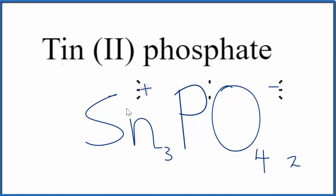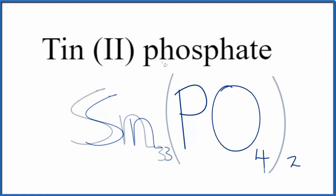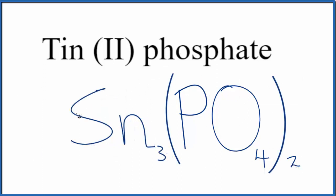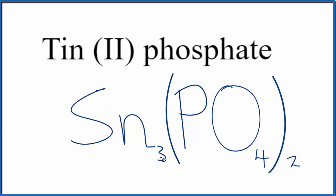Get rid of these charges, and we do need to put parentheses around the phosphate since we have two of them. That makes the formula for tin(II) phosphate: Sn3(PO4)2.